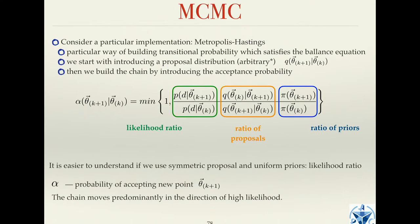One way of constructing this transitional probability satisfying the balance equation was suggested by Metropolis and Hastings. They introduce first what they call a proposal distribution — it's completely in your hands and completely arbitrary. It is the way of jumping from one point to another. It could be Gaussian, uniform, or anything you want. The key point is that your end result does not depend on what you use here.